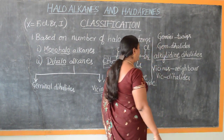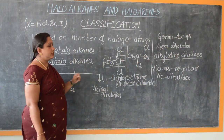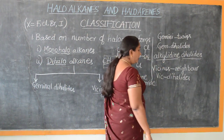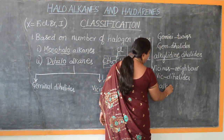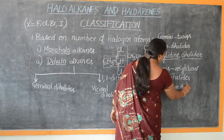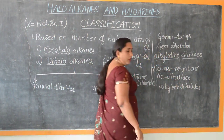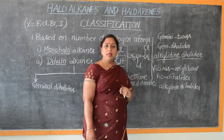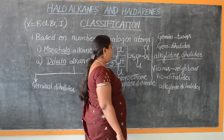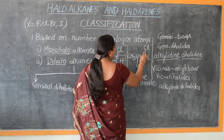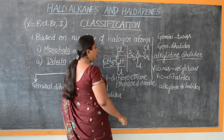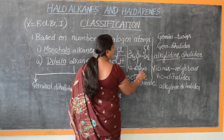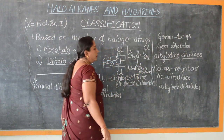Vic dihalides is the short form of vicinal dihalides. Just as gem dihalides are called alkylidene dihalides, similarly vic dihalides are called alkylene dihalides. Now let us name this compound both in IUPAC nomenclature. The IUPAC name of this compound is 1,2-dichloropropane.